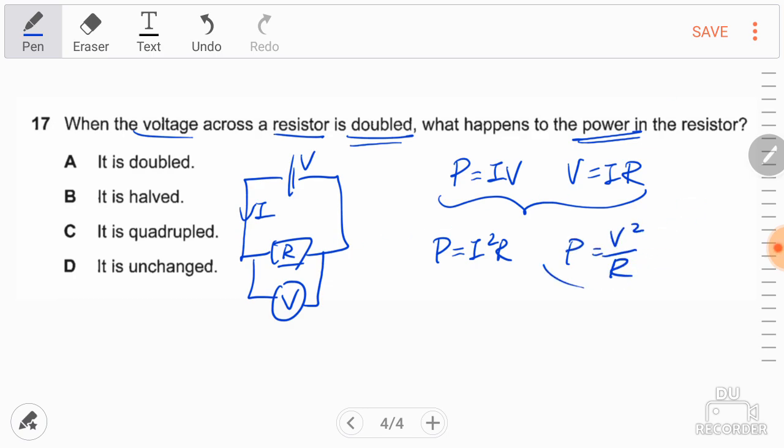For this question, it will be easier if I have to use this formula because the R is fixed, you are given that the V will be doubled and you're supposed to find the power. Since R is constant, power is directly proportional to V squared.